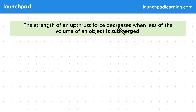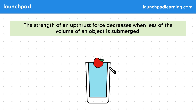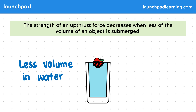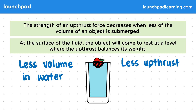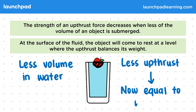The strength of an upthrust force decreases when less of the volume of an object is submerged. You don't need to know why this is or how upthrust would be calculated, but it is a key fact you'll need to recall and apply. Looking at the apple in a glass of water, where it has now reached the surface and come to a stop — it's partially submerged, with less of its volume in the water, meaning there is less upthrust acting on it. At the surface of the fluid, the object will come to rest at a level where the upthrust balances its weight. The upthrust has decreased just enough so that it is now equal to the weight, making the two forces equal and opposite, which means the apple comes to a stop. In practice, we'd probably see it bob up and down a little until it found the right level to stabilise at.